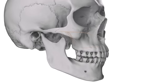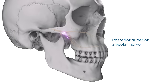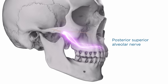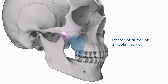The posterior superior alveolar nerve is the last branch to leave the maxillary trunk within the pterygopalatine fossa. Before it enters the maxilla, gingival branches are given off to innervate the buccal soft tissues of the maxillary molar and tuberosity region. The nerve then enters the maxilla and continues down the posterior wall of the maxillary sinus, ultimately contributing fibers to the superior dental plexus. The PSA nerve innervates the maxillary molar teeth — with the possible exception of the mesial buccal root of the first molar — the surrounding periodontium and adjacent buccal mucosa, and the mucous membrane of the maxillary sinus.